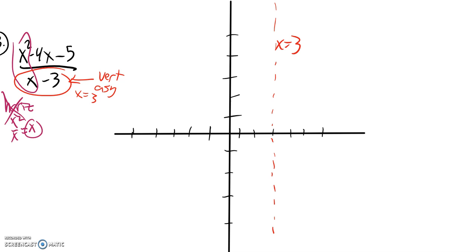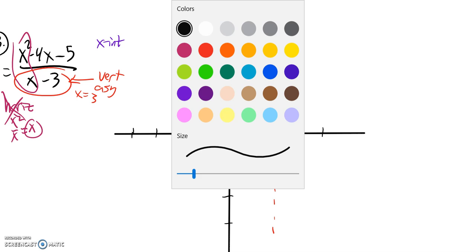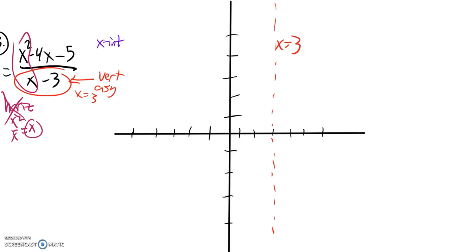I can find some intercepts as well. Let me think about x-intercept. x-intercept is when y is 0, when this whole thing evaluates to 0. That's going to happen when my numerators are 0. So x squared minus 4x minus 5, when's that 0? I can solve that.